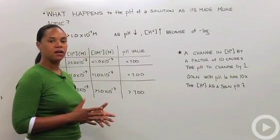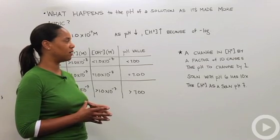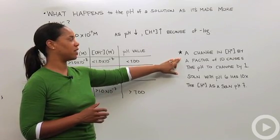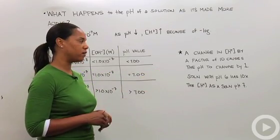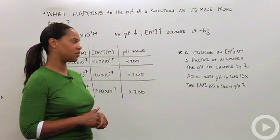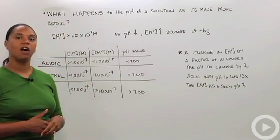Again, in the beginning I noted that we use a log scale because of the changes in magnitude by protons, and so it's important to note that a change in concentration of protons by a factor of 10 only causes the pH to change by 1. So that a solution with a pH of 6 has 10 times the proton concentration as a solution of pH 7. And so that's why we use the log base.